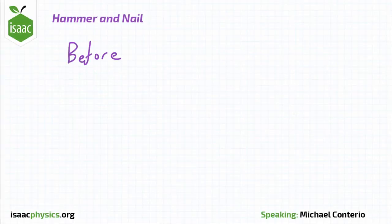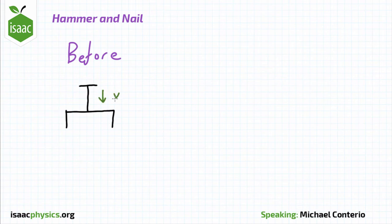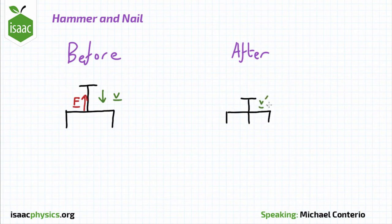The nail starts moving downwards into the block with a speed v, moving against a resistive force f. Afterwards, it has stopped with zero velocity, but has moved a distance x deeper into the block.